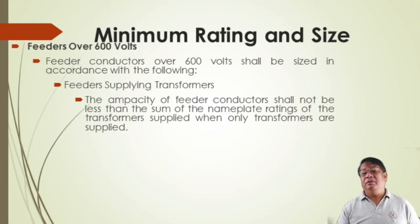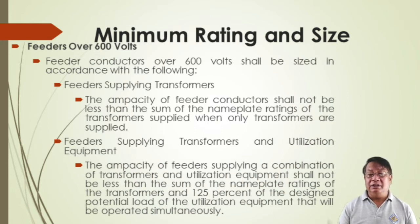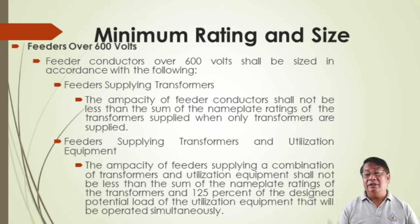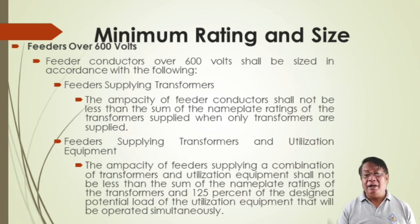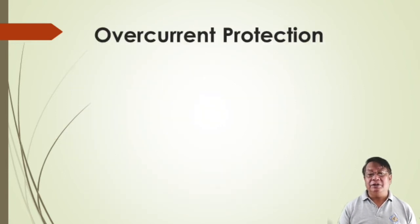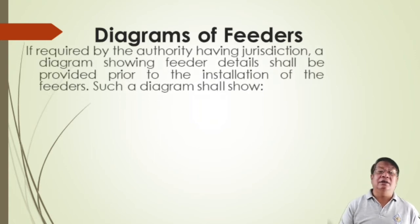For utilization equipment, the ampacity of feeders supplying a combination of transformers and utilization equipment shall not be less than the sum of the nameplate ratings of the transformers. Otherwise there will be voltage drop or voltage fluctuation if it is above the transformer rating. When a feeder supplies continuous load, the rating of the overcurrent device shall not be less than the continuous load plus 125% of that continuous load.